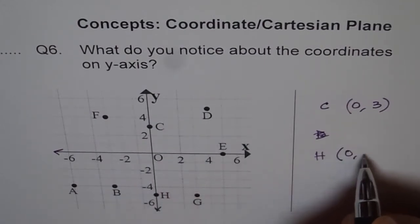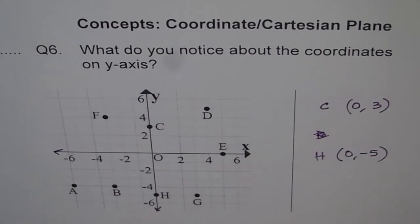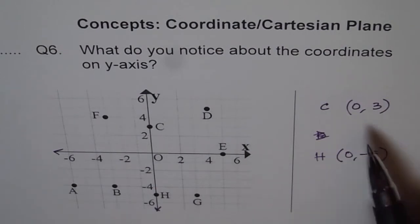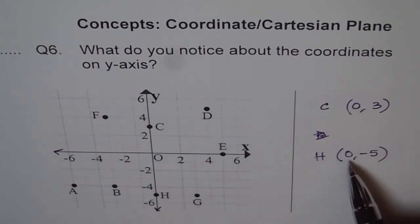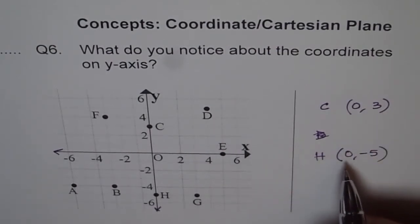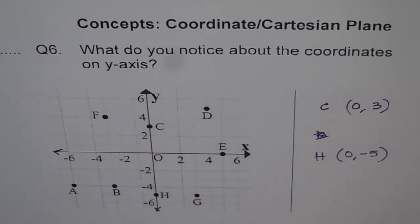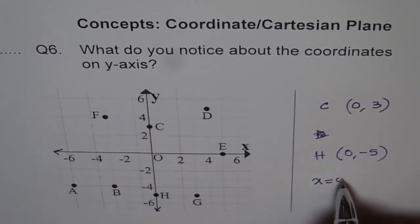So 0 and minus 5 since you move 5 down, correct? Now what do you notice? You notice that the x-coordinate is the same for them, right? The horizontal x-coordinate is the same, you see, which is 0. So points on the y-axis will always have x equals to 0. x equals to 0 for points on the y-axis.